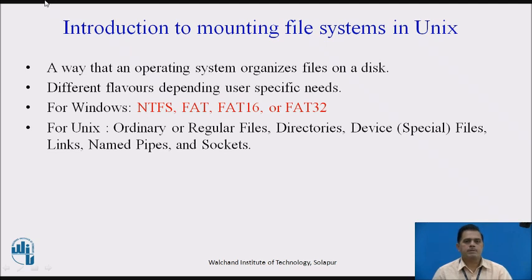A file system is a way that an operating system organizes files on a disk. These file systems come in many different flavors depending on your specific needs. For Windows, you have NTFS, FAT, FAT16 or FAT32 file systems. For Macintosh, you have the HFS file system, and for Linux, you have more file systems than we can list in this tutorial. One great thing about Linux is that you have the ability to access data stored on many different file systems, even if these file systems are from other operating systems.